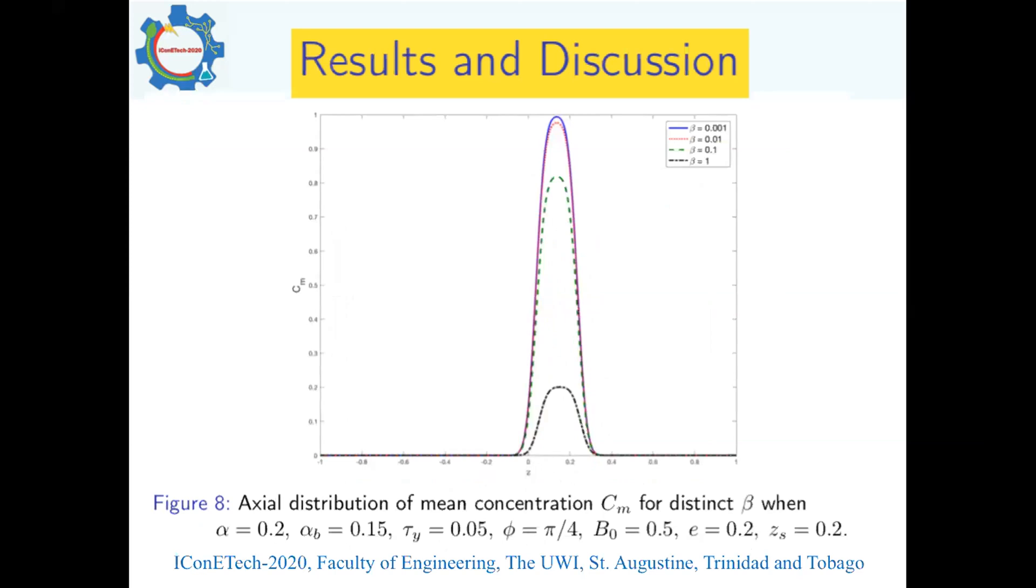Figure eight depicts the axial distribution of the mean concentration C_m for distinct values of the exchange parameter beta, with other parameters fixed. It tells us unsurprisingly that the peak of the mean concentration is shortened in significant measure as the absorption coefficient increases in magnitude. Physically this means that there is less and less solute present in the system because absorption is taking place.